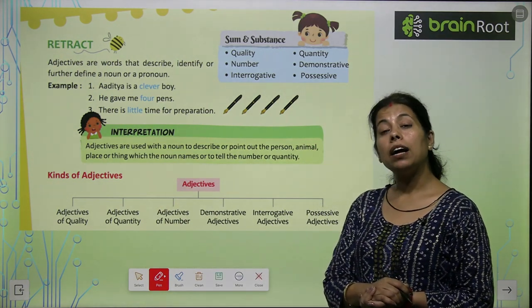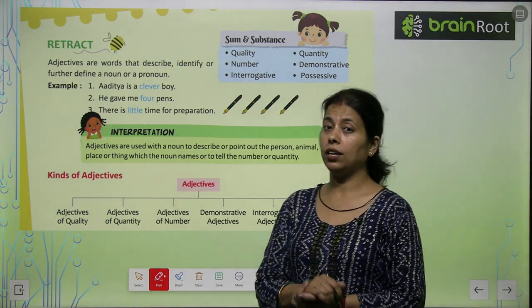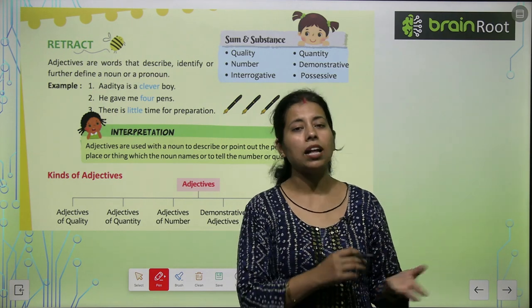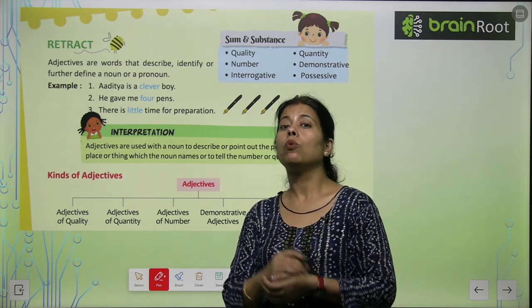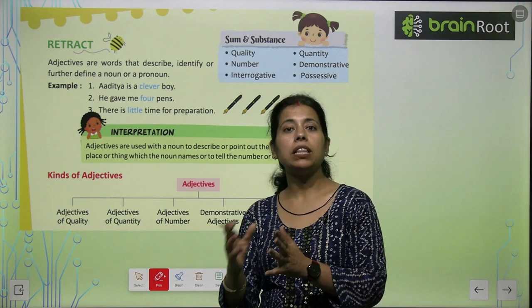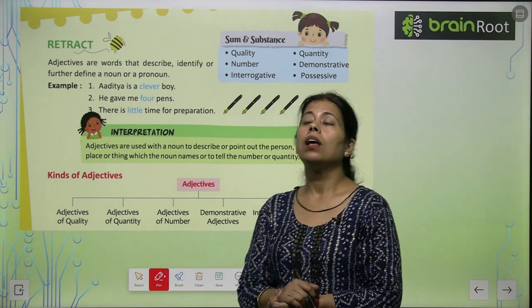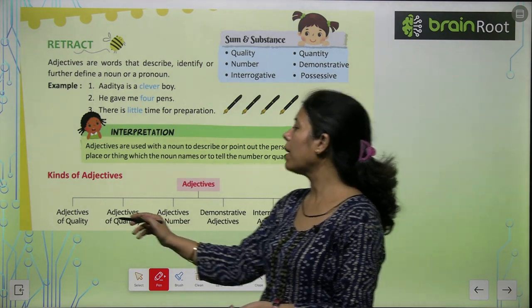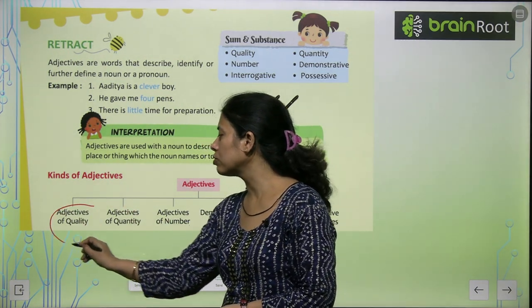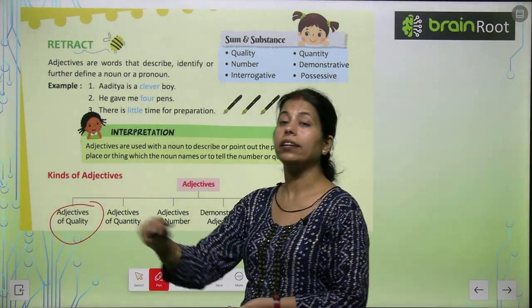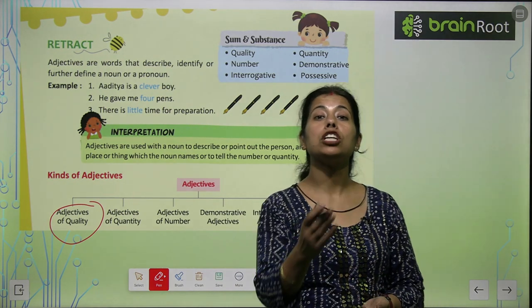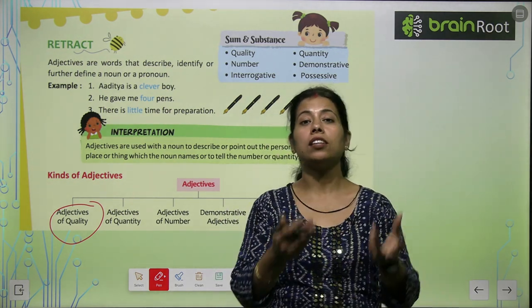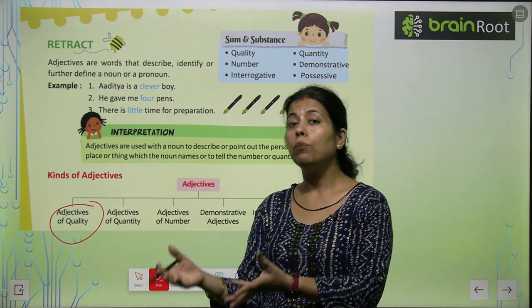Kinds of adjective — अब adjective के बहुत सारे kinds होते हैं। किसी में हम विशेषता बताते हैं, किसी में quantity या number बताते हैं। सबसे पहला है adjective of quality, जिसमें हम किसी की विशेषता बताते हैं — वो कैसा है, वो सुन्दर है, शैतान है, बुरा है।